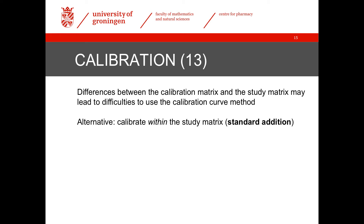The approach I just described assumes that an analyte gives the same response in the calibration matrix and the study matrix. Very often that is the case, but sometimes the composition is different — for example, because the calibration matrix is taken from healthy volunteers and the study matrix is from patients. Or, more often for endogenous analytes, the calibration matrix is a surrogate matrix, such as a buffer, and the study matrix is plasma. In such a case, calibration can be approached in a different way, by the method of standard addition.